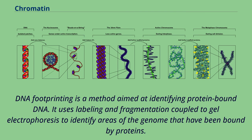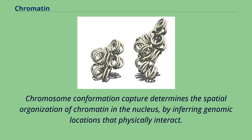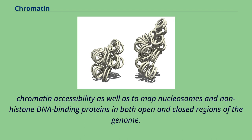DNA footprinting is a method aimed at identifying protein-bound DNA. It uses labeling and fragmentation coupled to gel electrophoresis to identify areas of the genome that have been bound by proteins. MNase-seq uses the micrococcal nuclease enzyme to identify nucleosome positioning throughout the genome. Chromosome conformation capture determines the spatial organization of chromatin in the nucleus by inferring genomic locations that physically interact. MAG profiling uses a titration series of chromatin digests with micrococcal nuclease to identify chromatin accessibility as well as to map nucleosomes and non-histone DNA-binding proteins in both open and closed regions of the genome.